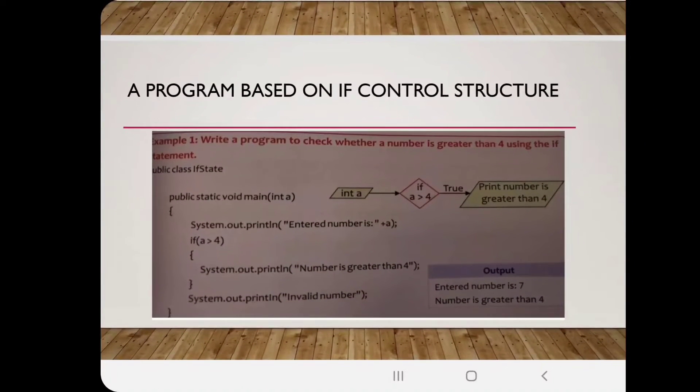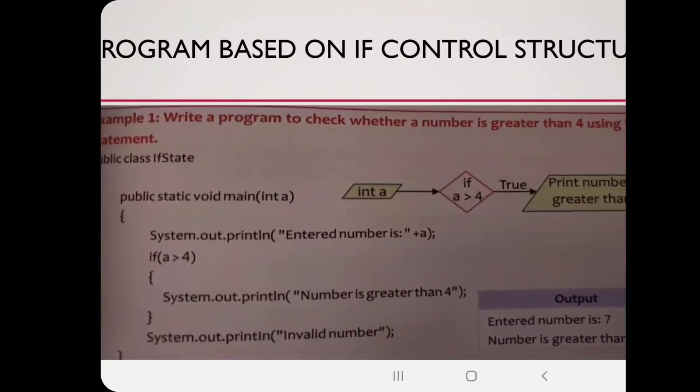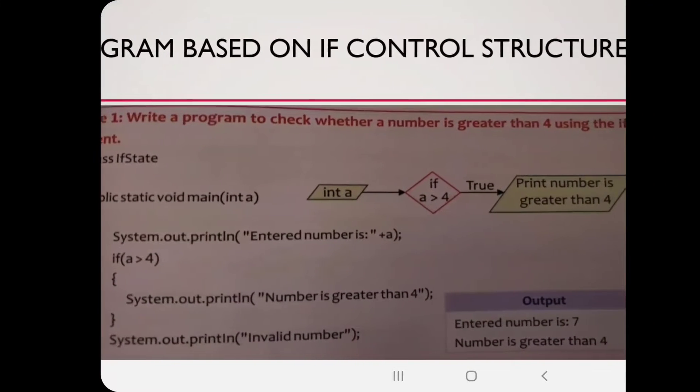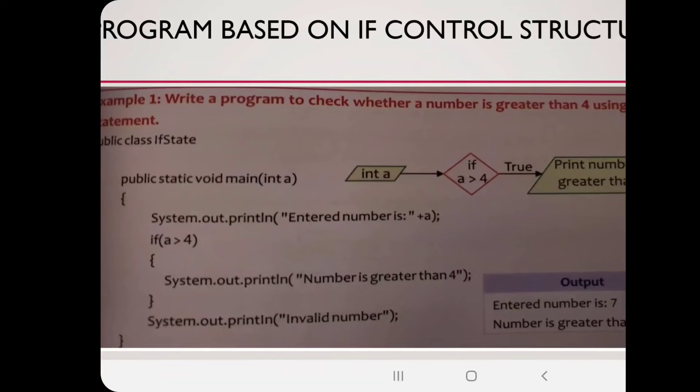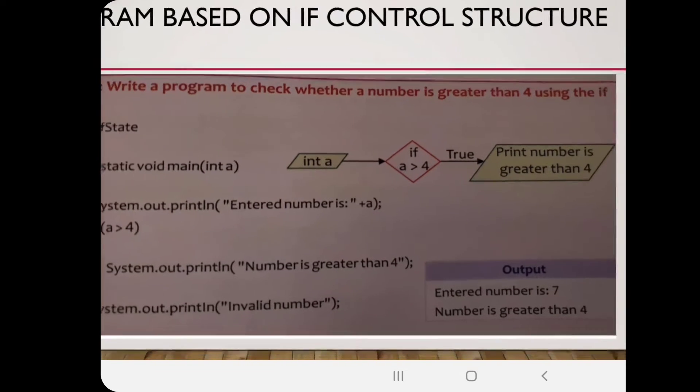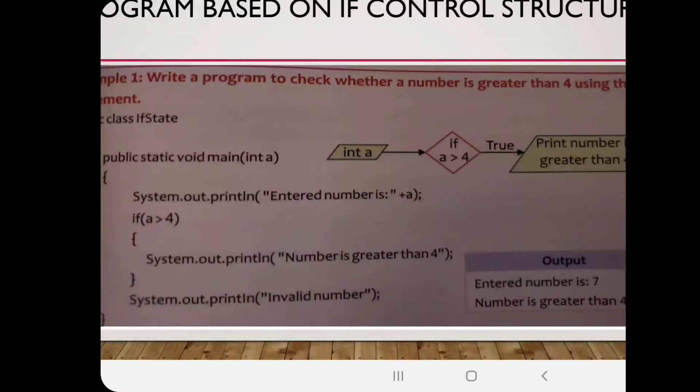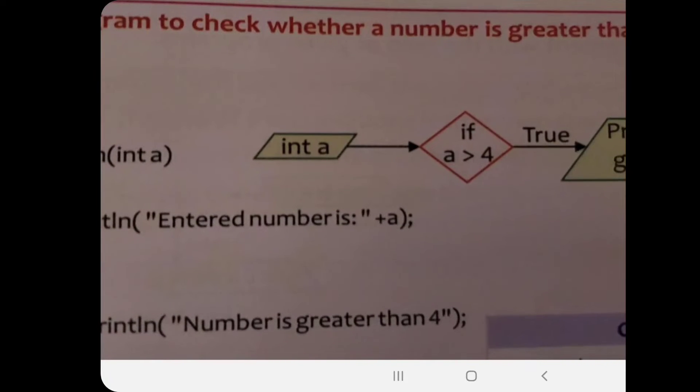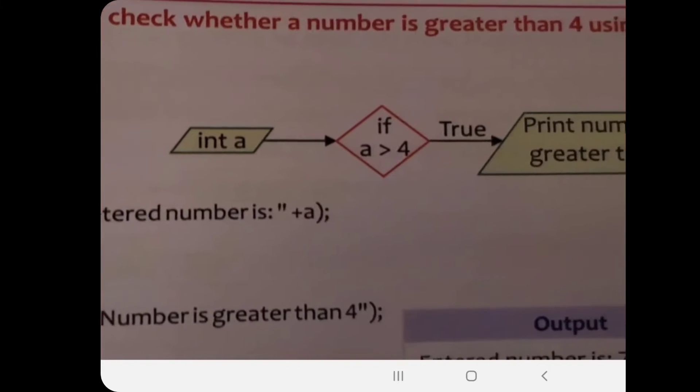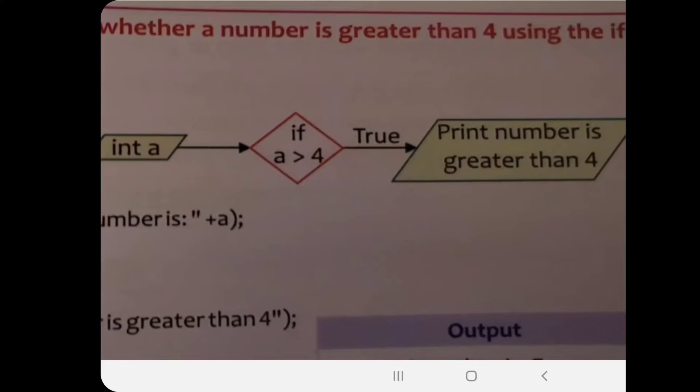Now I'm showing you one program based on if control. This program is to check whether a number is greater than four. If a number is greater than four, how do we check? You can see the structure: int a, which is in an input box, and then in a decision box, there is if a is greater than four. Only this condition you have to check. If this goes true, print the number which is greater than four. Simple, it's too easy. There is no other option.